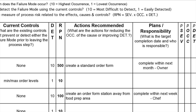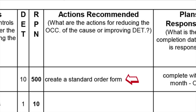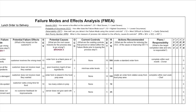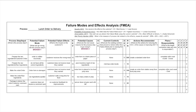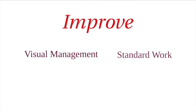If you recall from our FMEA of the BLT lunch order example, one of the actions recommended was to create a standard order form. We should note that many improvement actions require new or updated procedures. The two primary tools you'll learn about and use during the improve phase are visual management and standard work.